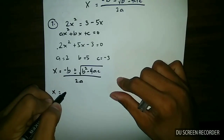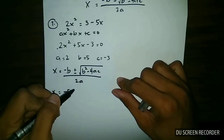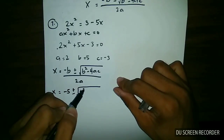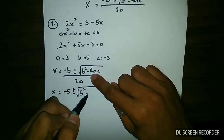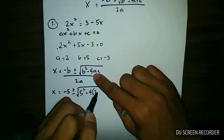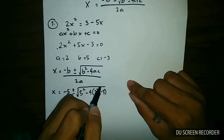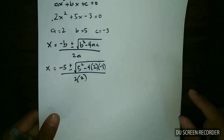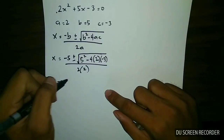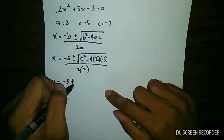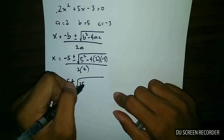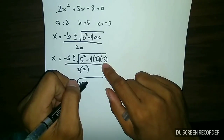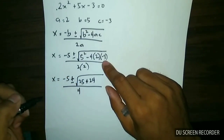So we have x is equal to negative 5, plus or minus the square root of 5 squared minus 4 times 2 times negative 3, all over 2 times 2. Simplifying, x is equal to negative 5 plus or minus the square root of 25 — and negative 4 times 2 times negative 3 gives us positive 24 — all over 4.